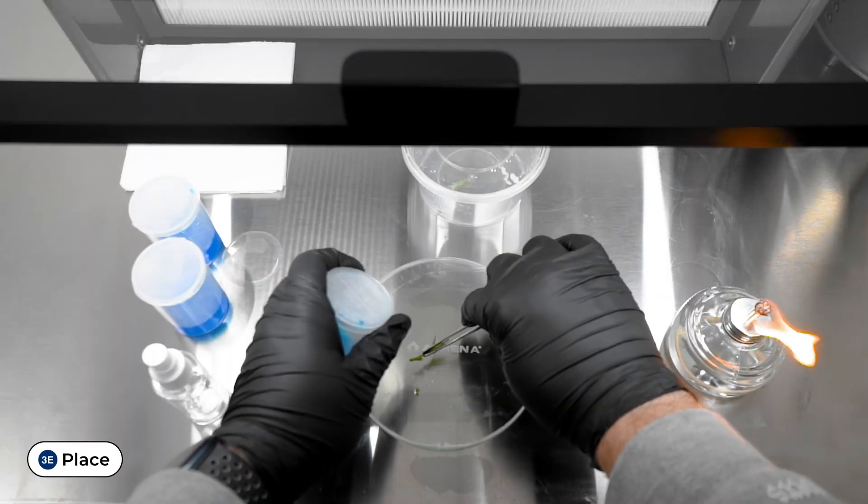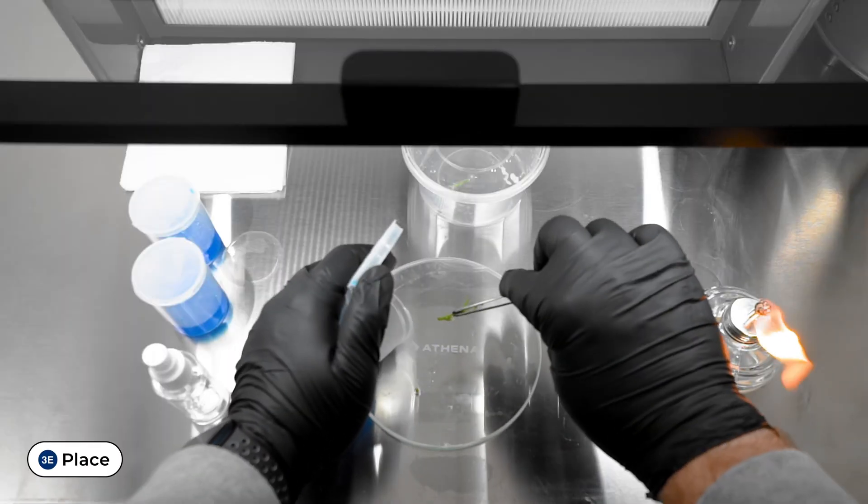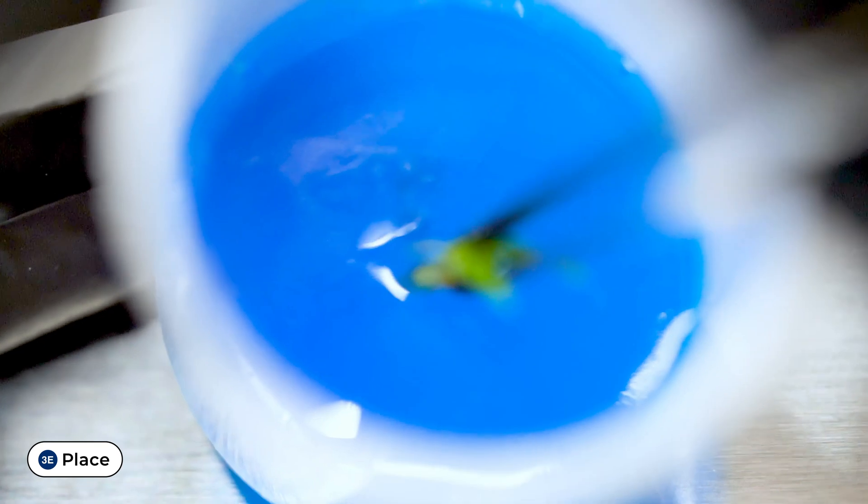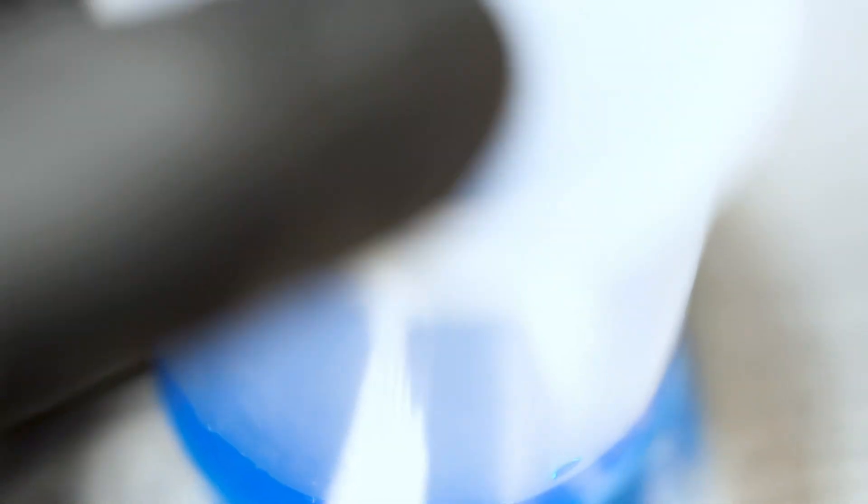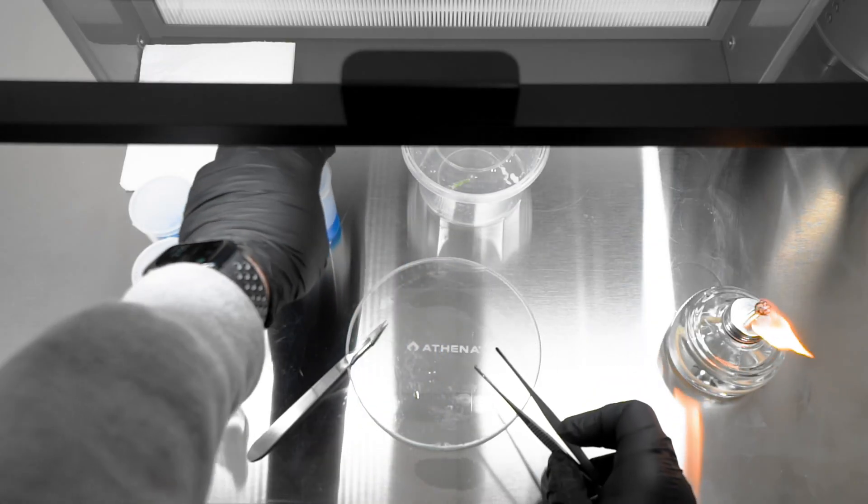Slightly open a culture vessel and place the node's exposed tissue into the media, ensuring that the tools do not touch the media or culture vessels. Close the cap right away. This is now an explant.